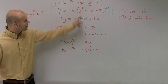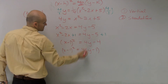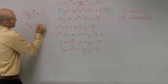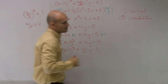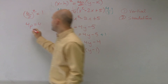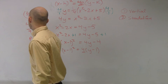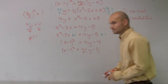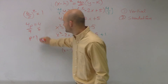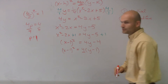So 4p corresponds to this, meaning 4p equals 4. To solve for p, I divide by 4 on both sides, and p equals 1.